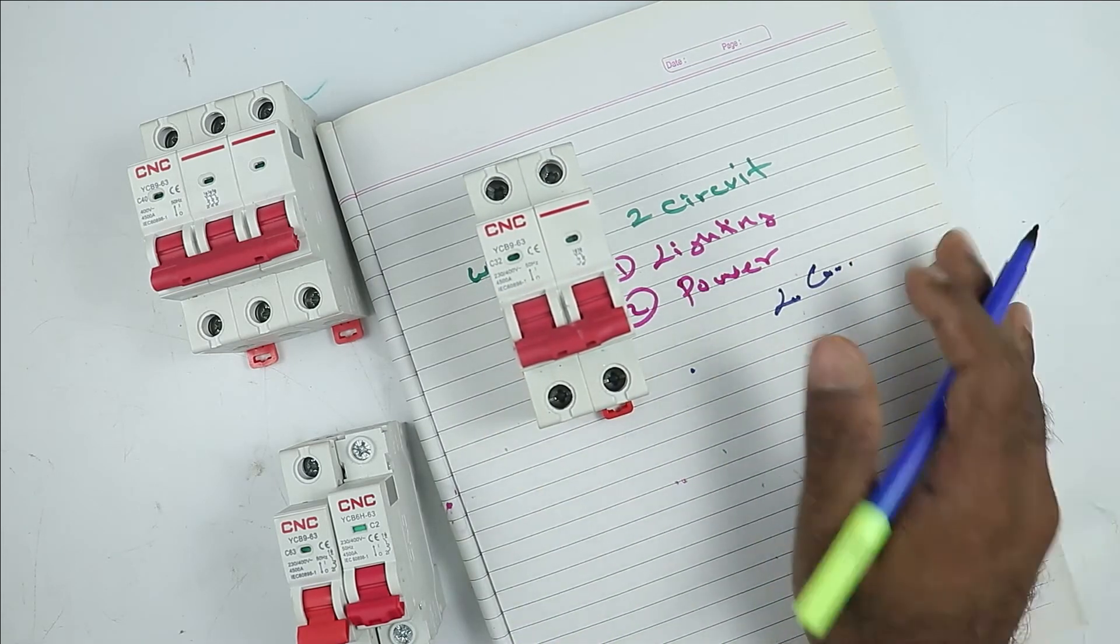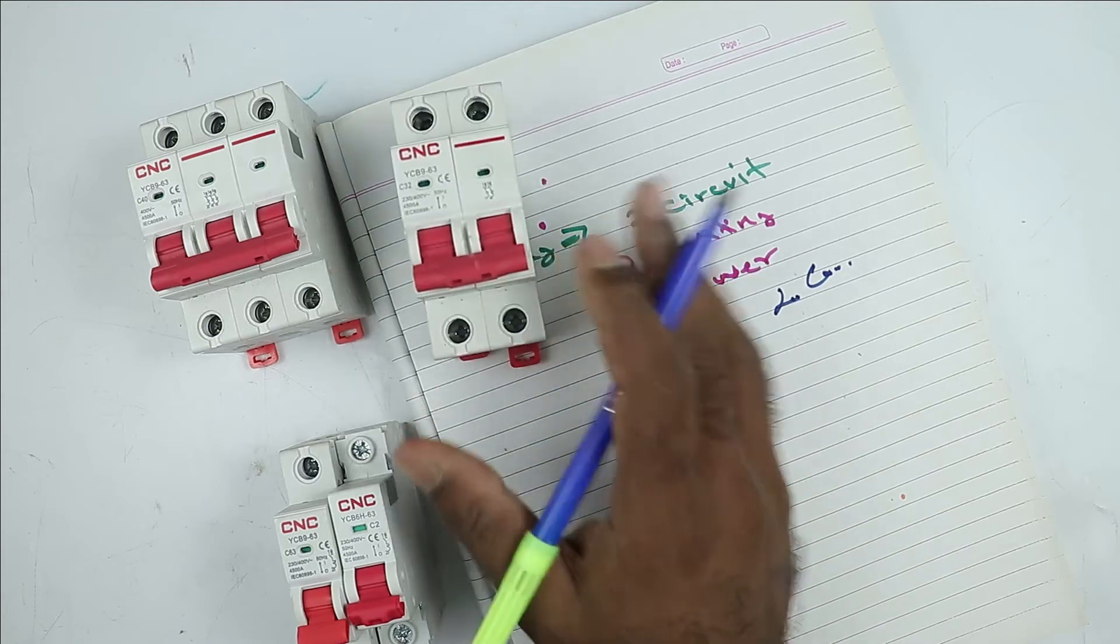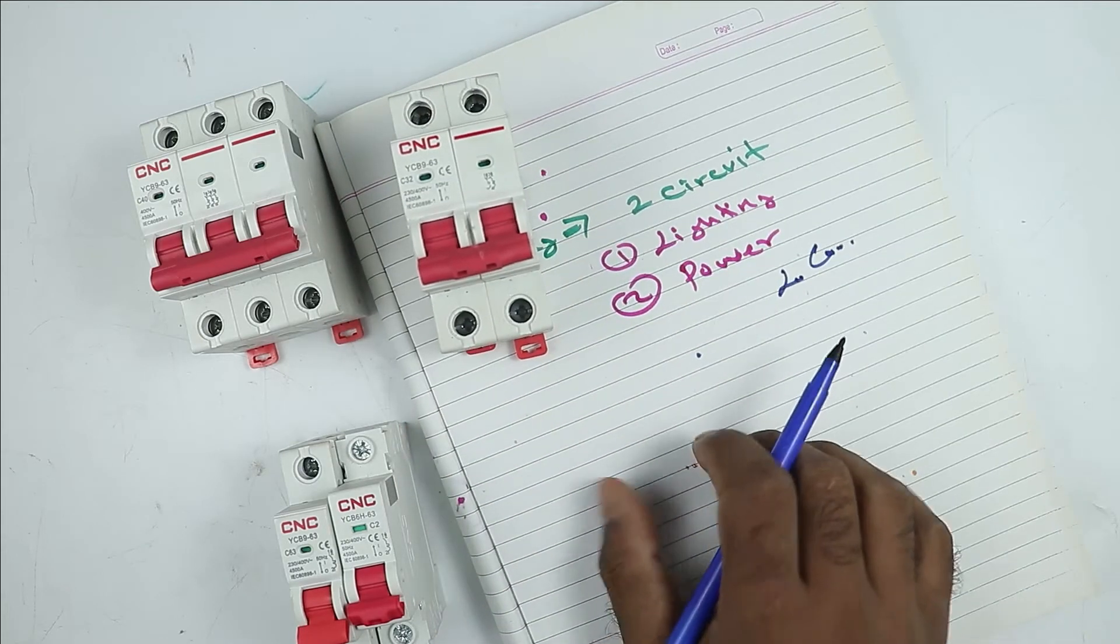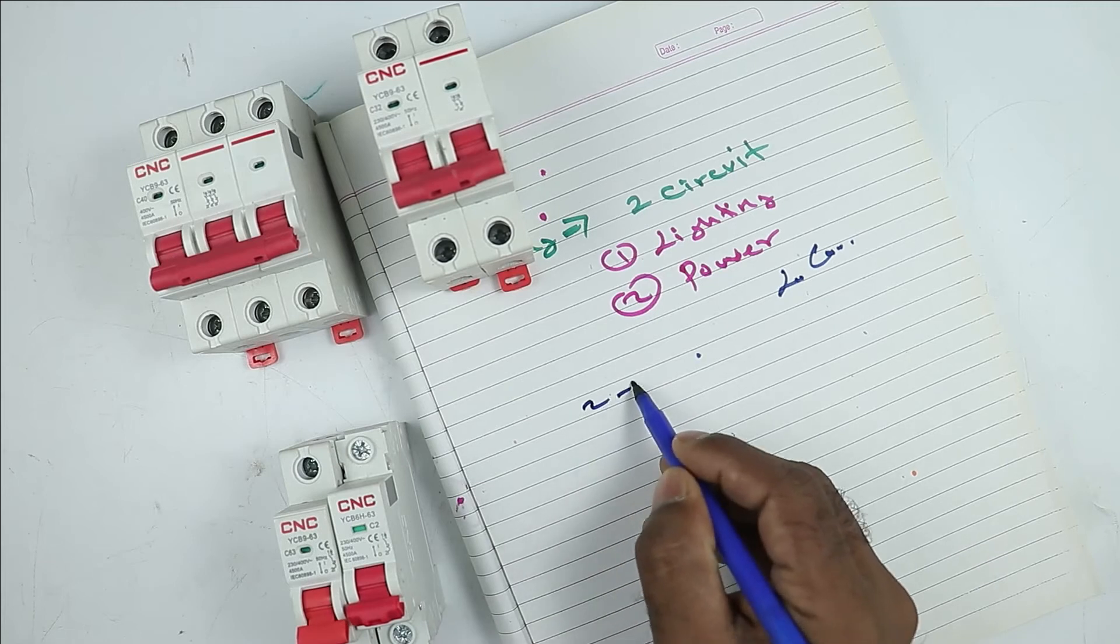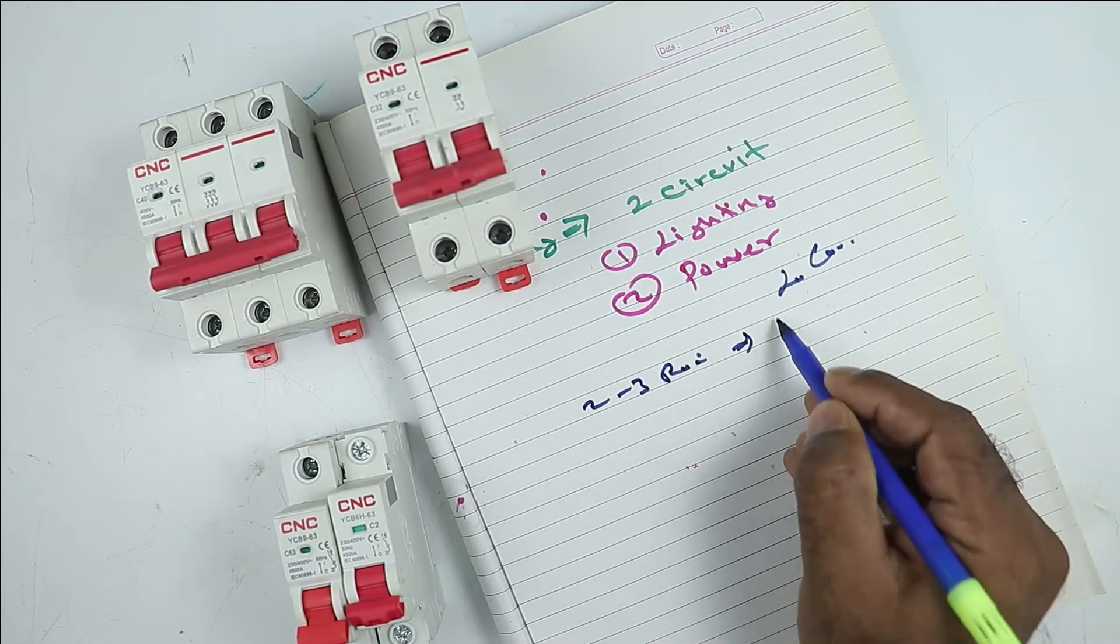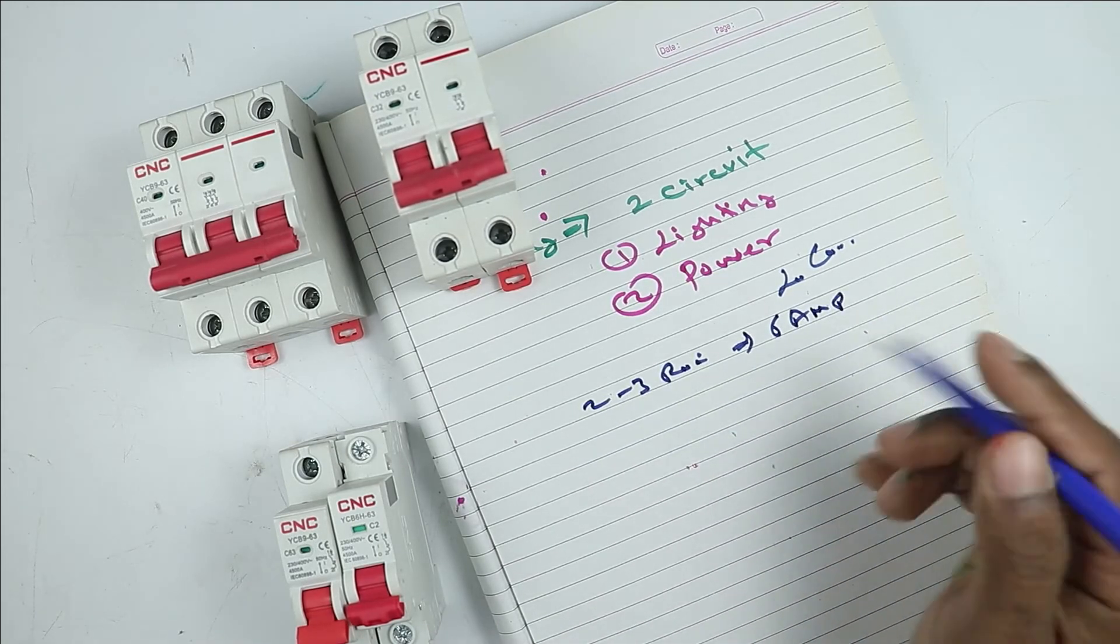To find out the required rating of MCB, a calculation is needed. If you don't want to go for calculation, there is also a simpler way. If only 2 to 3 rooms are there in your home, then you can use 6 ampere MCB for lighting circuit.